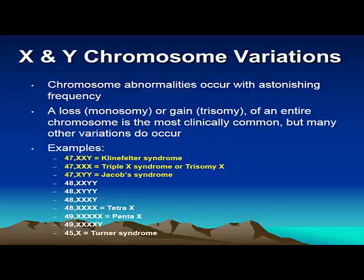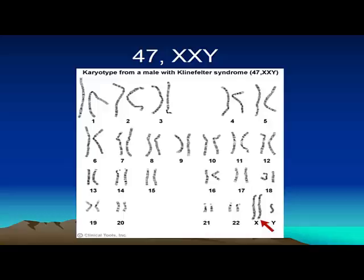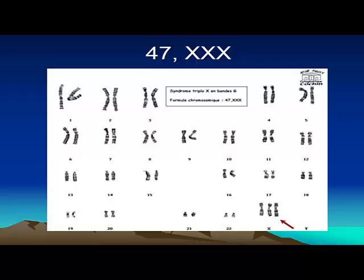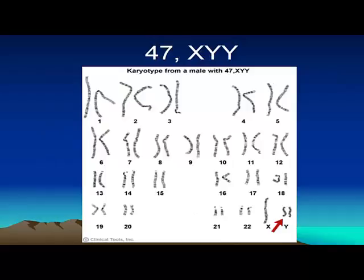Chromosome abnormalities occur with a high frequency. A loss is a monosomy, or a gain is a trisomy of an entire extra chromosome, and they're the most clinically common conditions, but many other variations occur. The examples I'm going to focus on today are highlighted in yellow and include XXY or Klinefelter syndrome, XXX or Trisomy X, and XYY also known as Jacobs syndrome. But there are several other X and Y chromosome variations. This is a karyotype from a male with Klinefelter syndrome — the red arrow highlights the extra X chromosome. The next shows a female with XXX syndrome, and the third shows a male with XYY, or the presence of an entire extra Y chromosome.